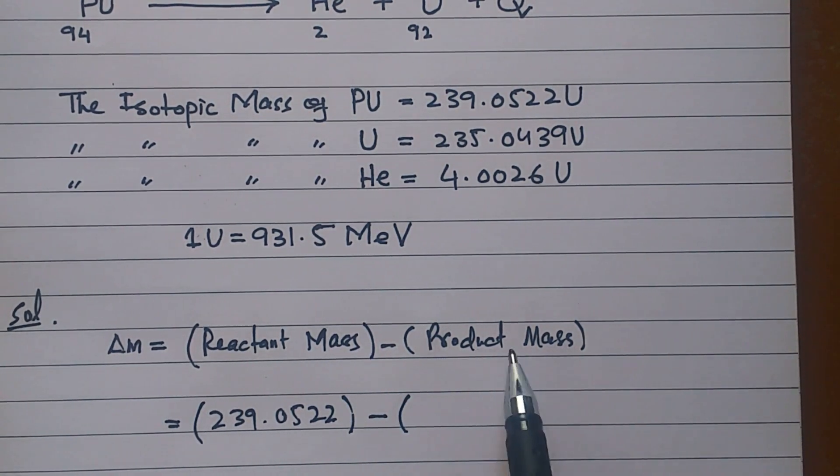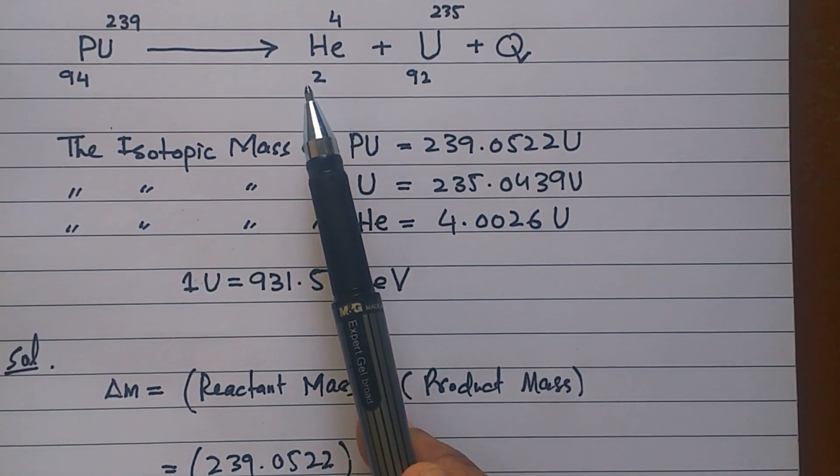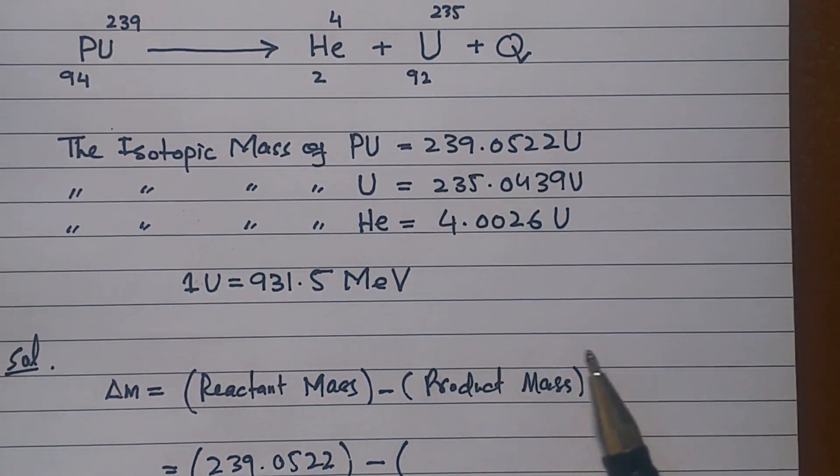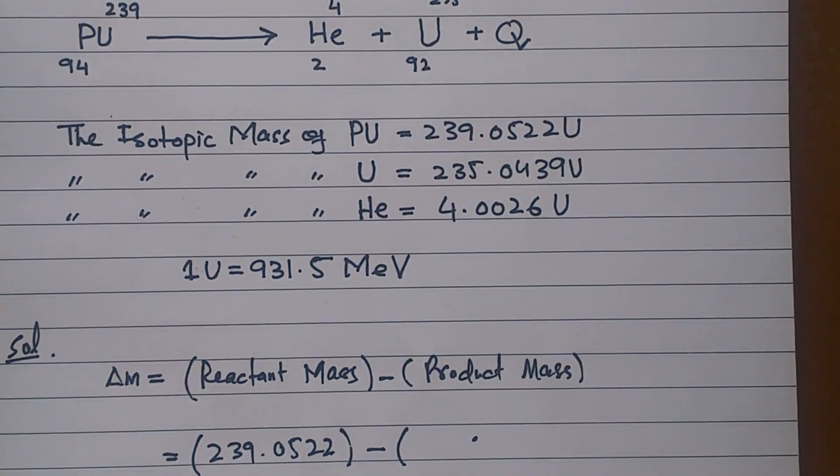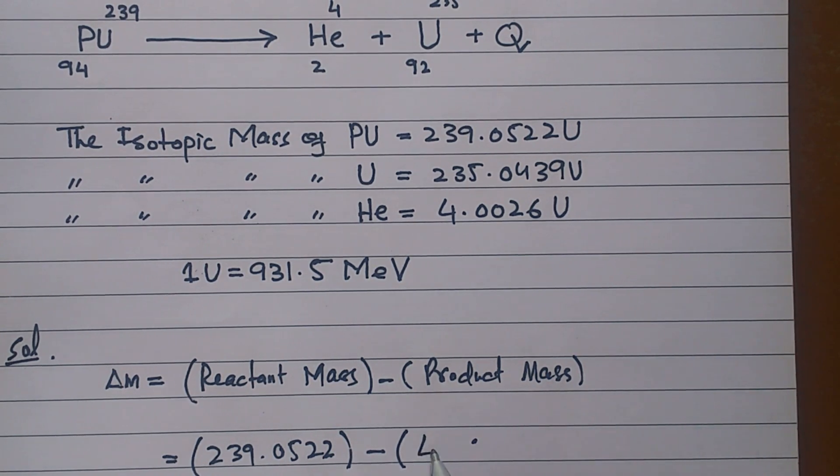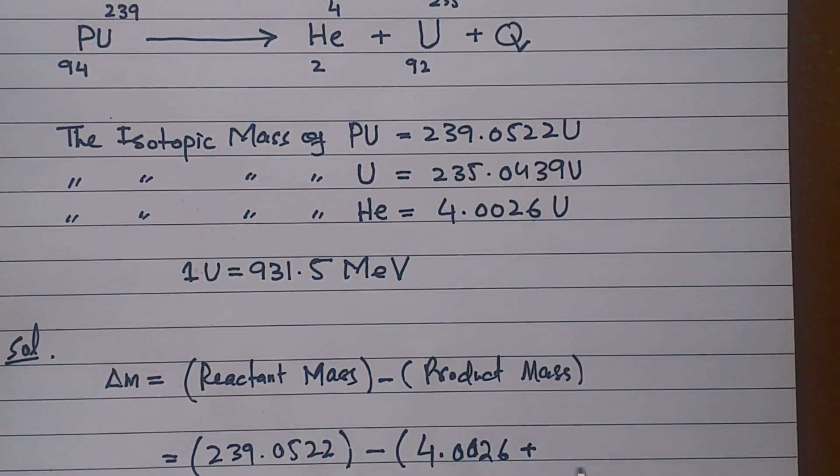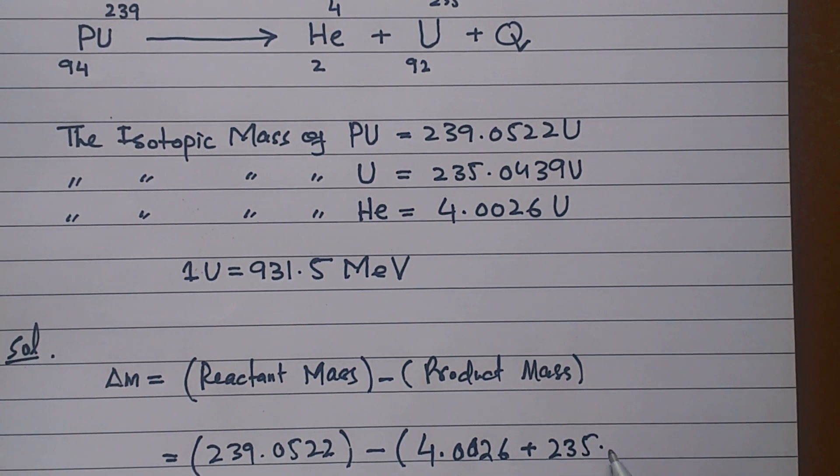If you look at the products, there is alpha particle and uranium. Both of the masses - alpha particle mass is 4.0026 plus uranium is 235.0439.